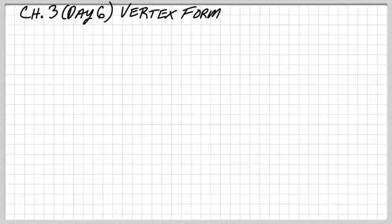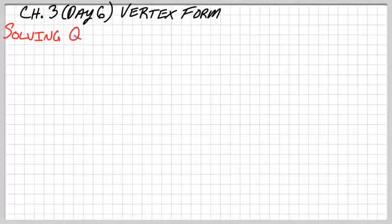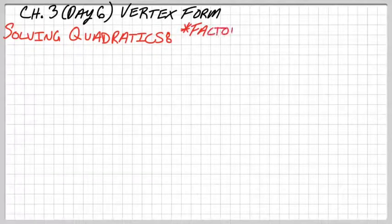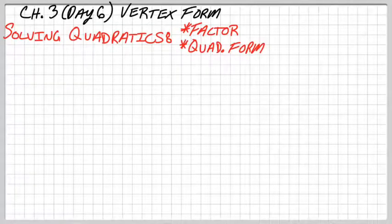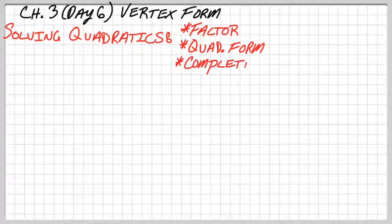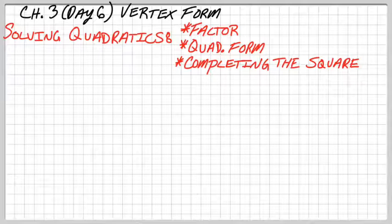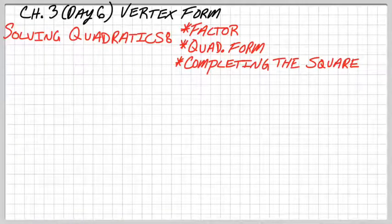We now have three ways that we can solve quadratic equations. One, we could factor it and set the factors equal to zero. So we've got factoring. Two, you can always solve it using the quadratic formula. And then now a third way we have to solve these things, whether or not it's factorable, is by completing the square. So those are three ways that we can solve quadratic equations.